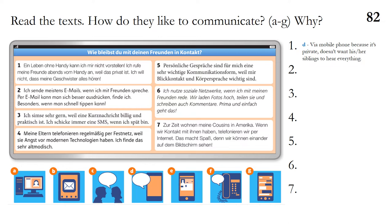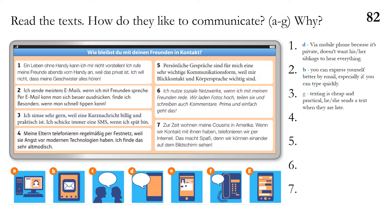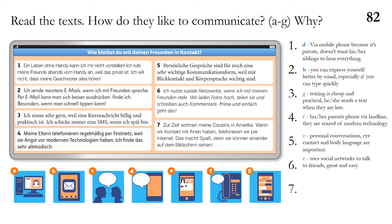Number one likes to communicate via mobile phone — that's D — because it's private and they don't want siblings to hear everything. Number two likes email because they can express themselves better. Number three likes texting — it's cheap and practical. Number four's parents phone via landline and are scared of modern technology. Number five values personal conversations — eye contact and body language, 'Blickkontakt und Körpersprache.' Number six uses social networks and finds it great and easy. Number seven likes internet calls and finds them fun as they can see each other on screen.